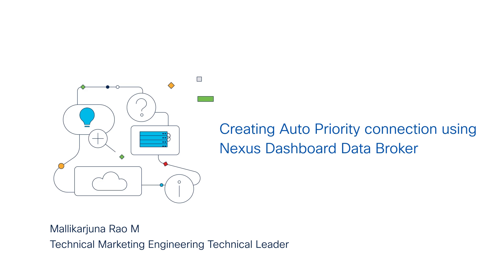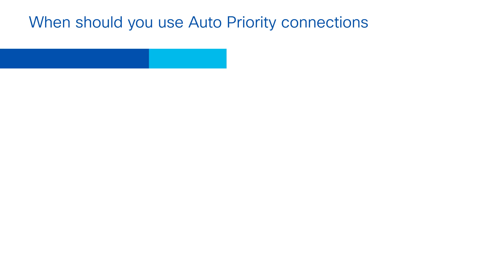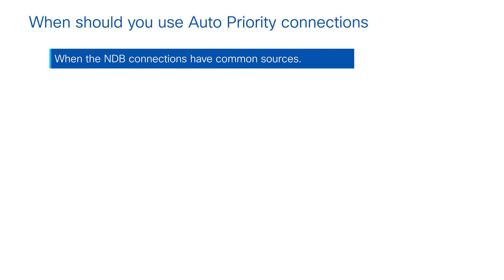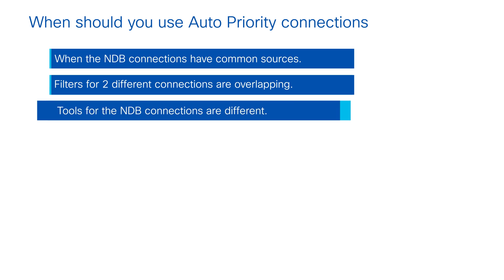First let's understand when we should use auto priority connections. The thumb rule is: when two connections have similar sources — in other words, common sources — the connection is ingested from one source and has two different overlapping filters, and the third criteria is that the tools for the connections are different.